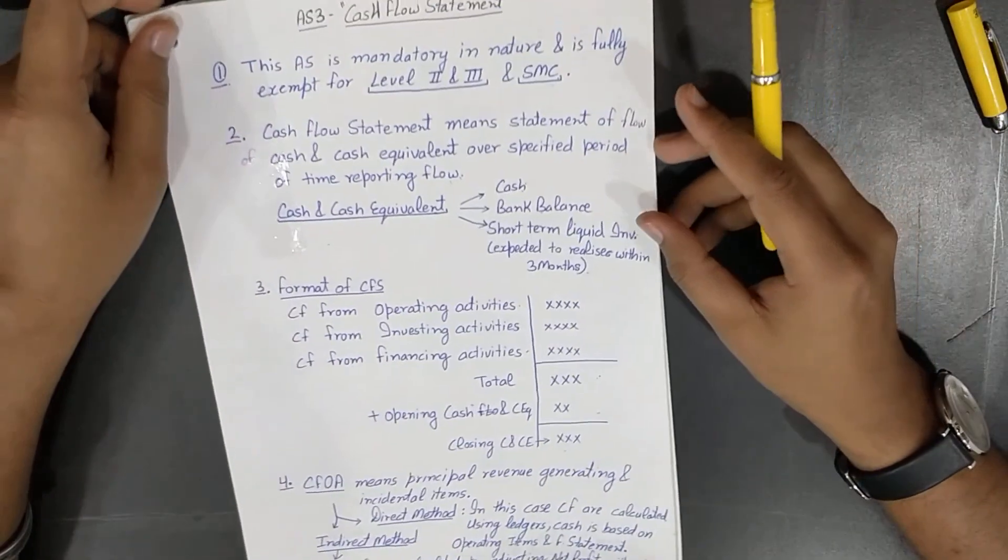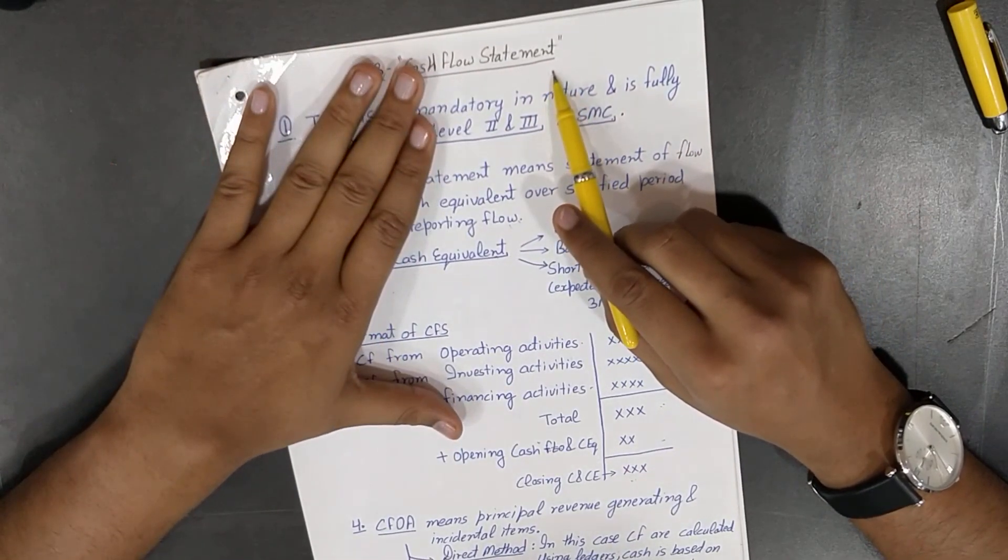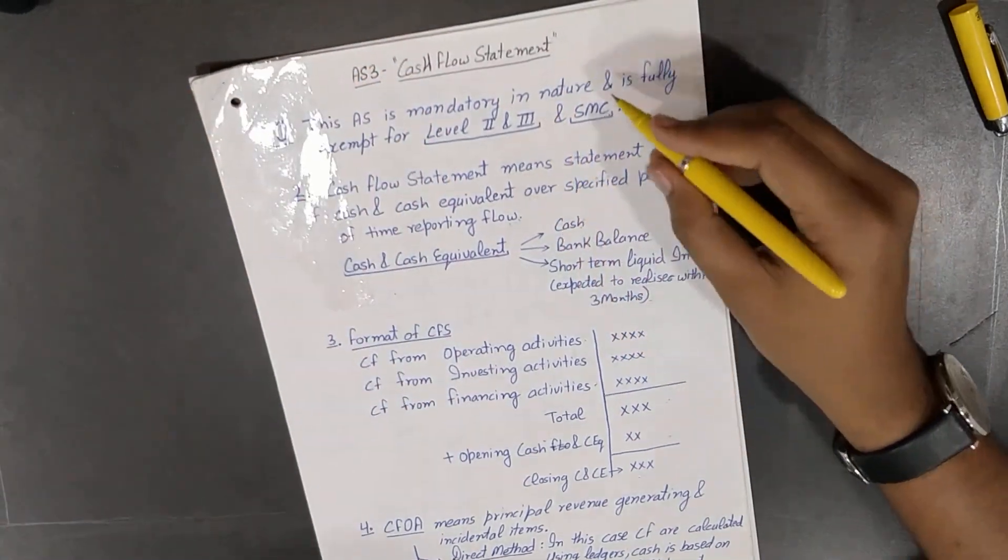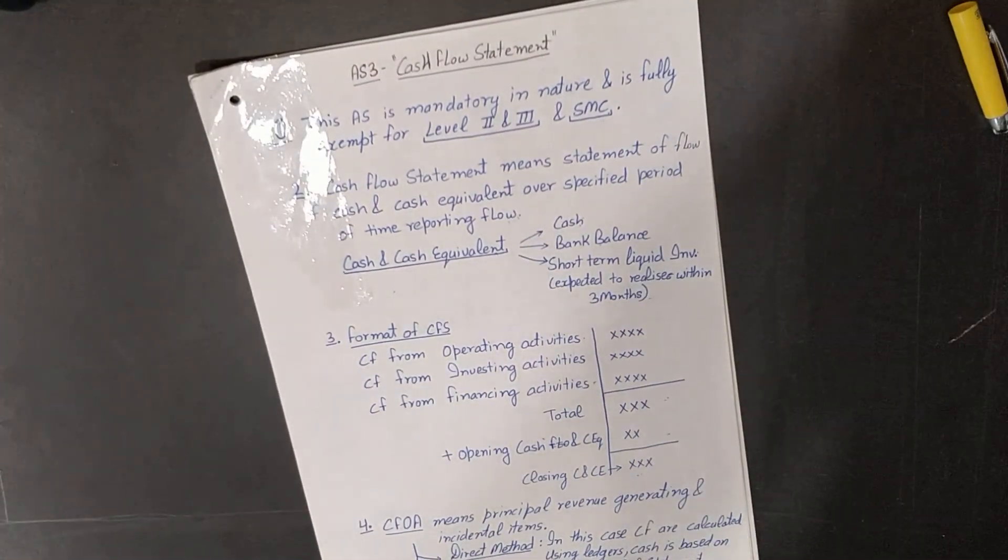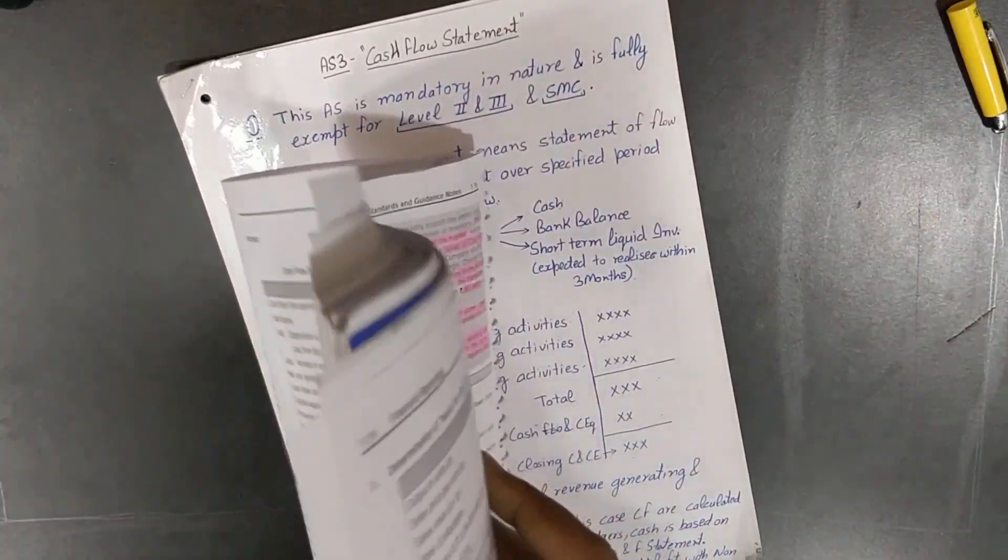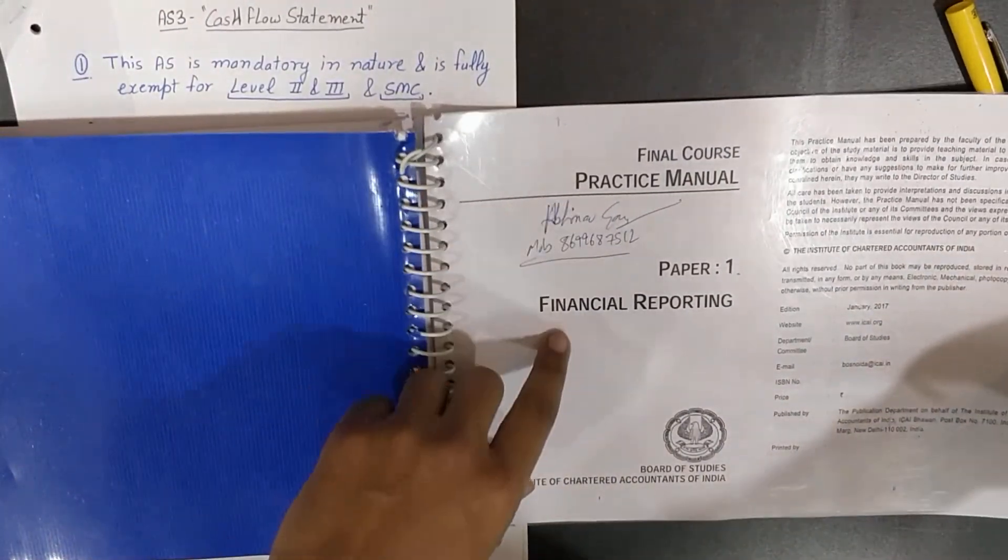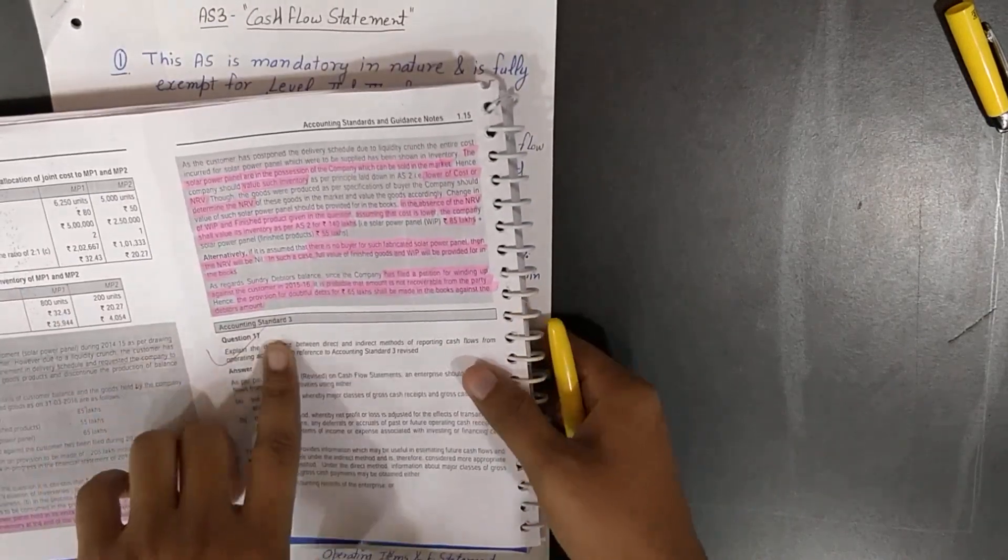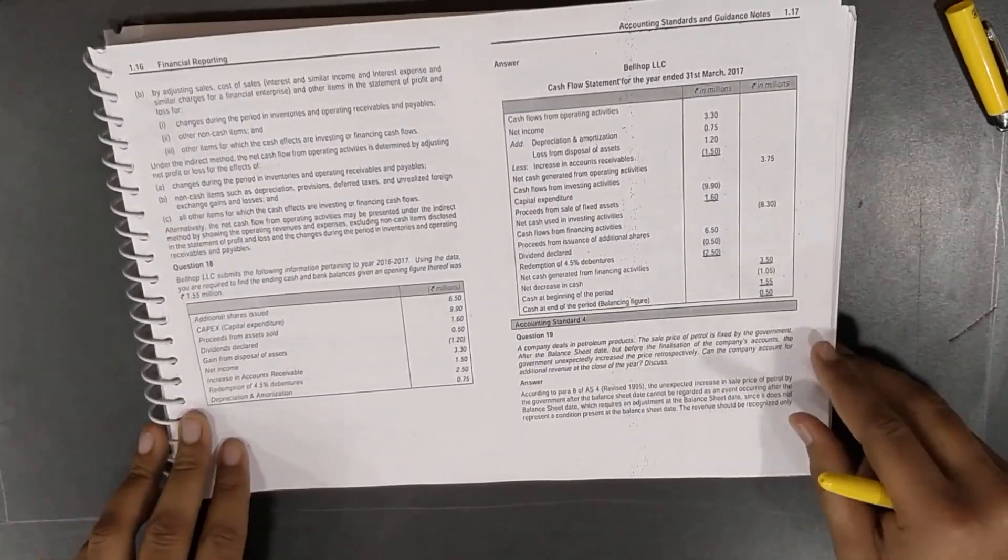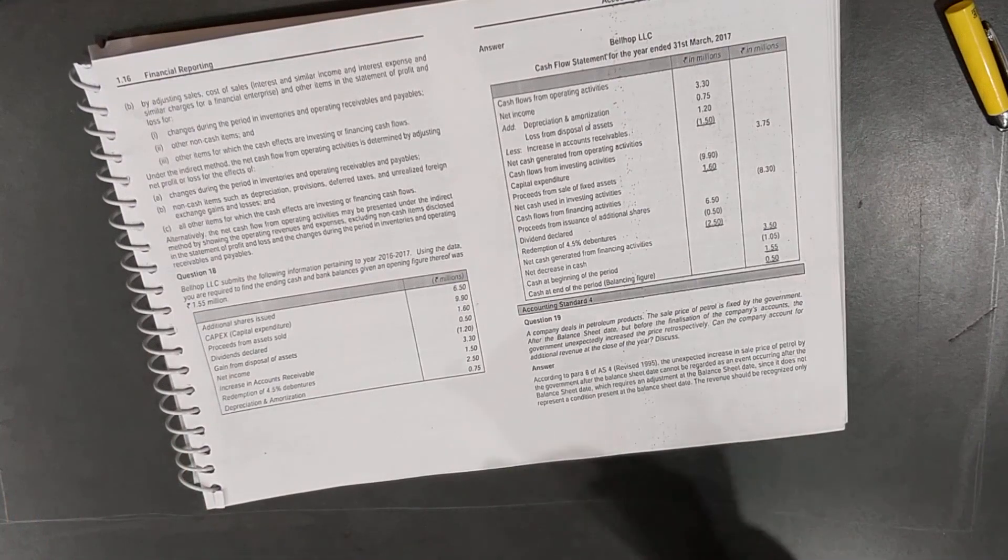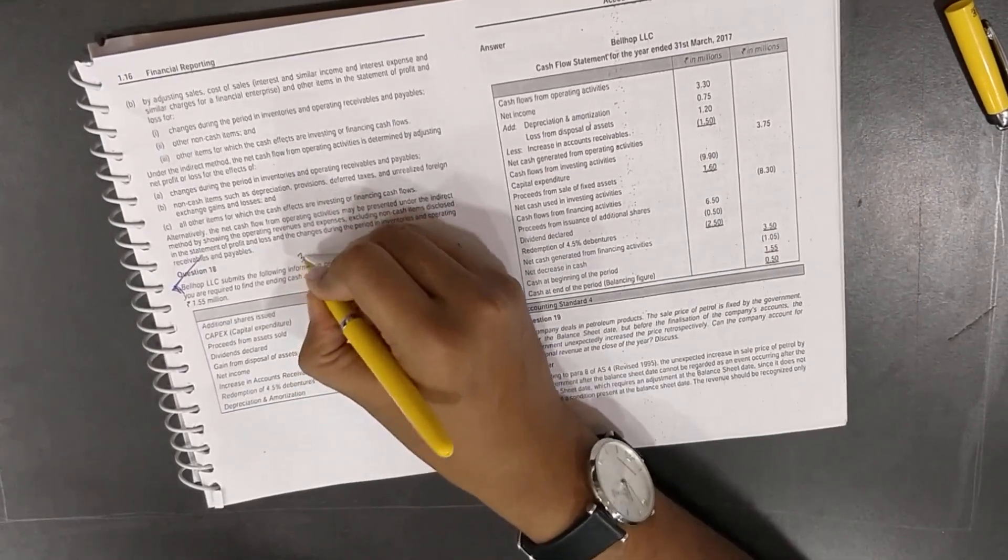So this completes our AS 3 Cash Flow Statement. This AS is not so relevant, but I'll recommend you one question that you should attempt from practice manual. Just hold on. This is practice manual financial reporting, Accounting Standard 3. There is only one question that you should practice, and that is question number 18. Again, do practice this question. It will take less than three to four minutes.